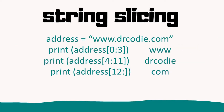With strings we can slice them into a substring. In Python we use square brackets with a colon — either side of the colon is the start and end position. Starting at zero means the beginning. So zero to three gives us 'www', four to eleven gives us 'drcodie'. In Python, if you're going to the end you don't need the last number — so '12:' means start at position twelve and go to the end, giving us 'com'.